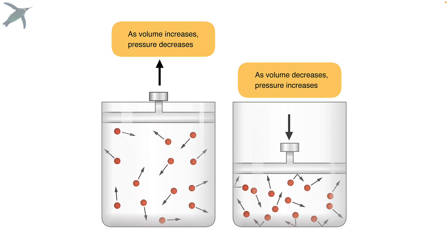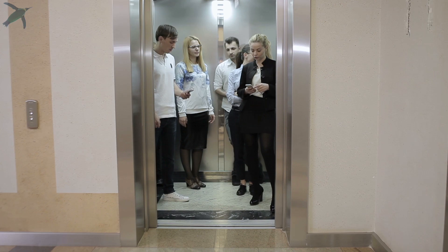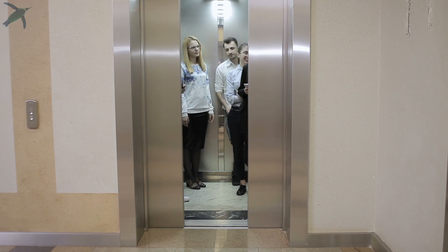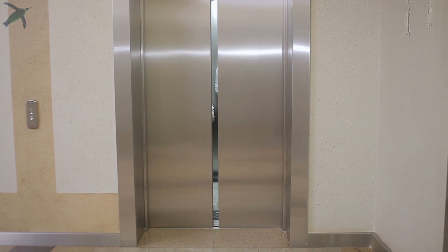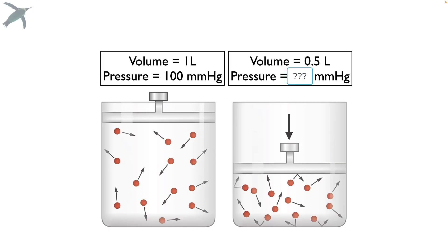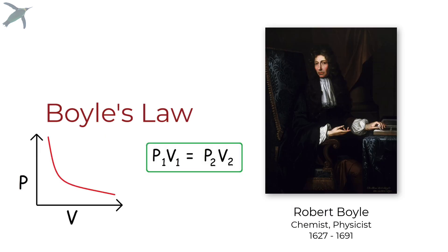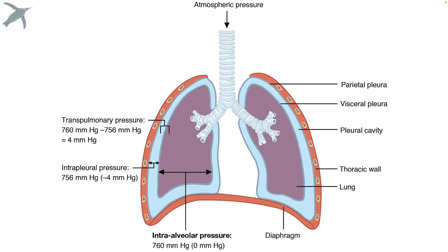As volume decreases, pressure increases. You can think about people in an elevator — if the volume decreases by half, the pressure doubles. By the way, this is Boyle's Law.